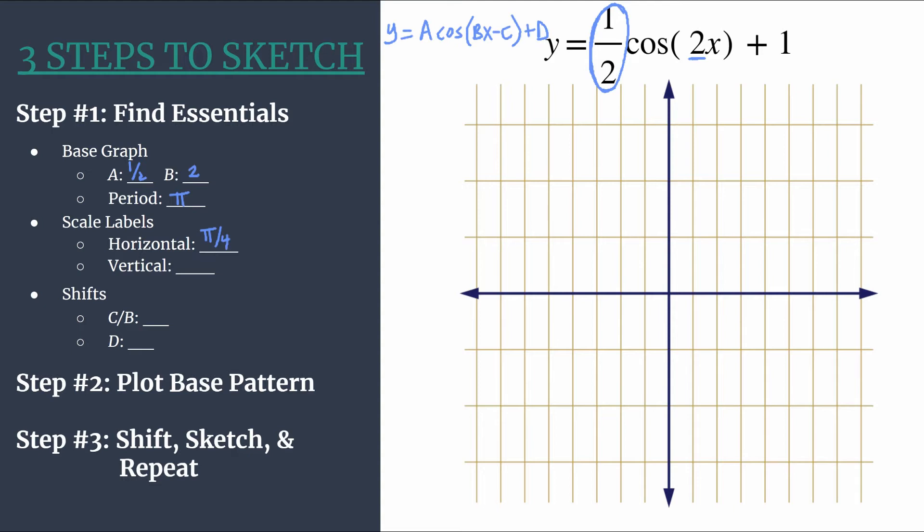For our vertical tick marks, 1 usually works really well. Let's take a minute to label. For the horizontal tick marks let's count by π/4. So we have 1π/4, 2π/4 which reduces to π/2, 3π/4, 4π/4. A quick check here: your fourth tick mark with this setup should always match your period. That's a good way to double check. We have π, that's our period.